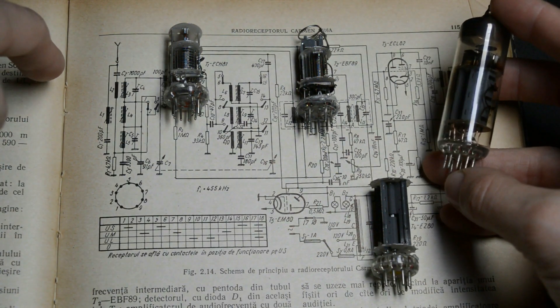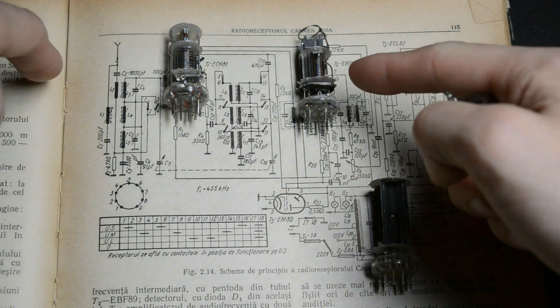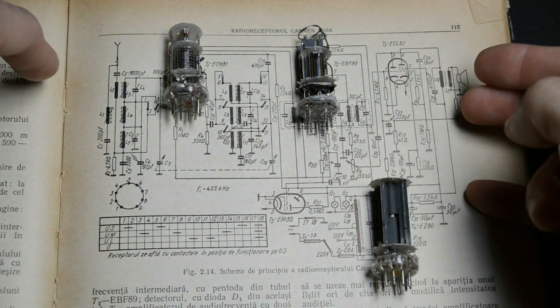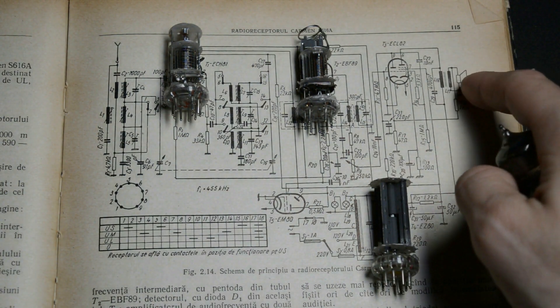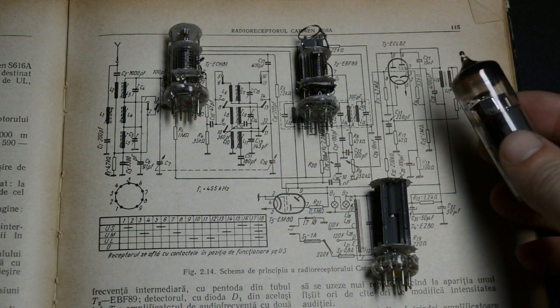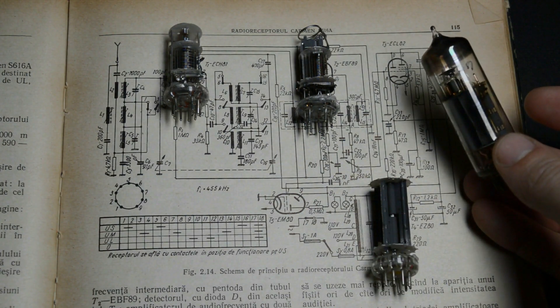So what does this tube do? Basically it takes the audio signal that was detected by the EVF-89, amplifies it to a sufficient degree so that it can be output through the speaker. If you're curious what's inside this tube, then keep watching.